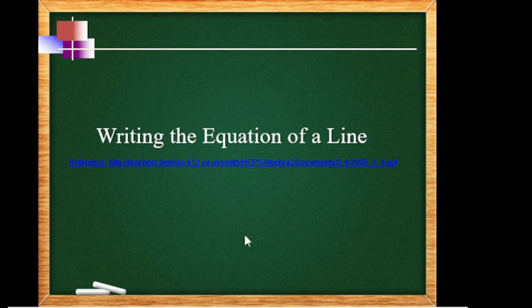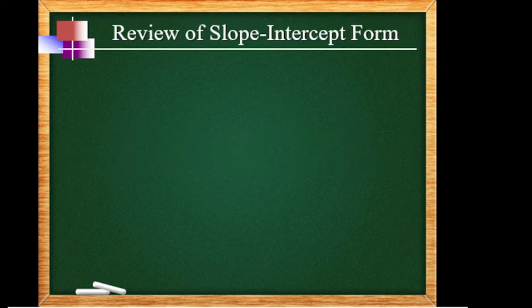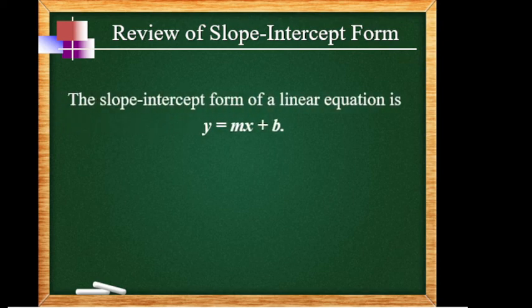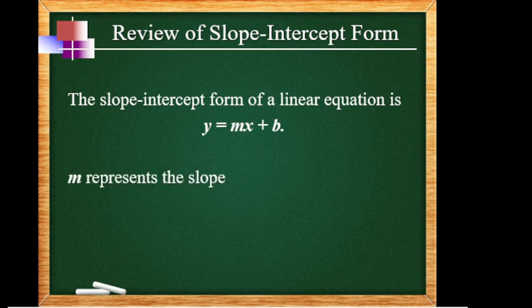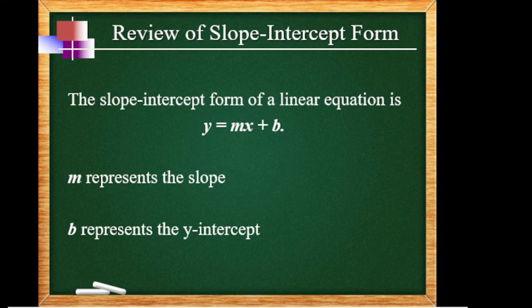Our topic today is writing the equations of the line depending on what the given information is. Review the slope-intercept form: the slope-intercept form of a linear equation is y is equal to mx plus b, where m represents the slope and b represents the y-intercept.